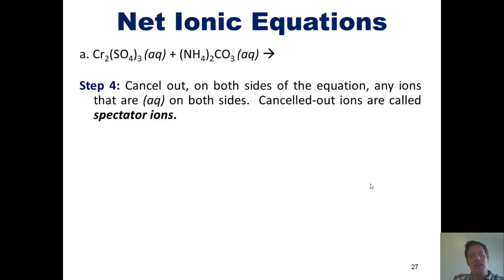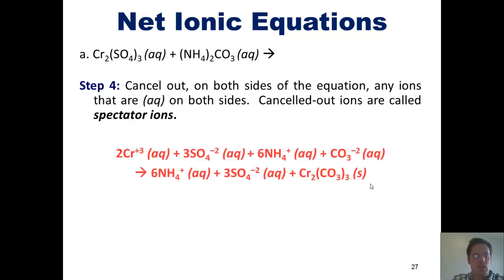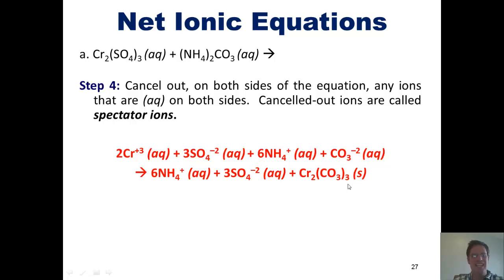Step 4 says we cancel out on both sides of the equation any ions that are the same on both sides — canceled out ions are called spectator ions. Looking at both sides of the equation, the sulfate looks exactly the same on the left and the right, so we cross it out. The ammonium looks exactly the same on the left and the right, so we cross it out as well.